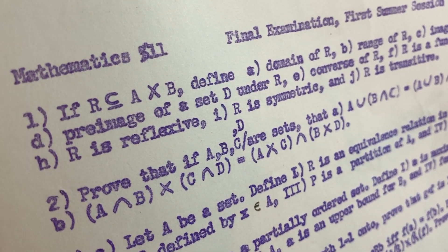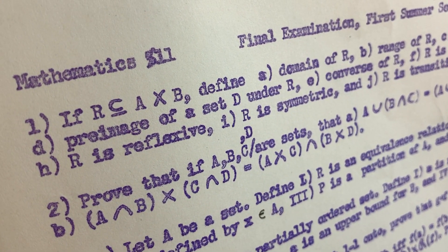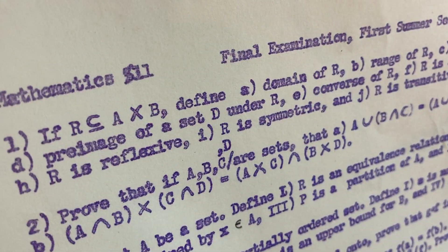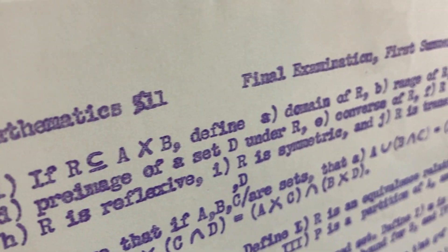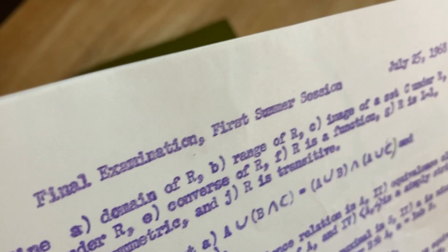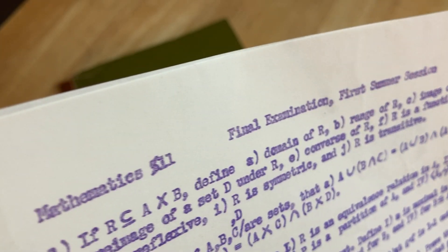If R is a subset of A cross B, define the domain of R. Oh, if R is a subset of A cross B, okay. Define the domain of R. Oh, I see. The range of R and the image of a set C. Right.